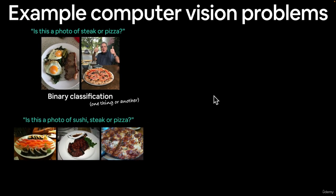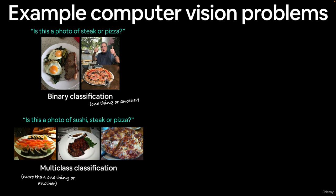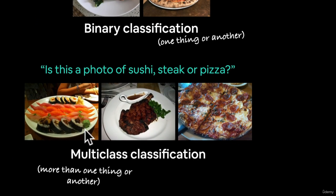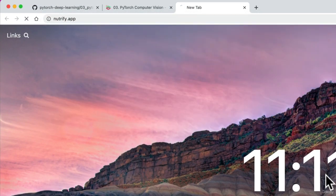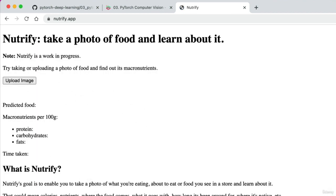We could also have a multi-class classification problem. Classification can be quite broad across different domains like vision, text, or audio. For an image problem, we might ask: is this sushi, steak, or pizza? That gives us three classes, but it could be a hundred — like what Nutrify uses, an app I'm working on. Right now Nutrify can classify up to a hundred different foods.